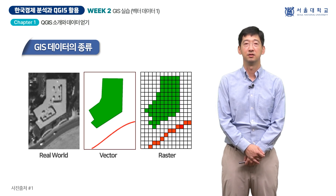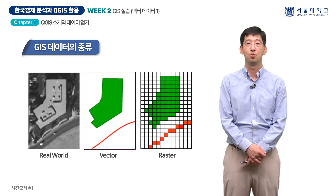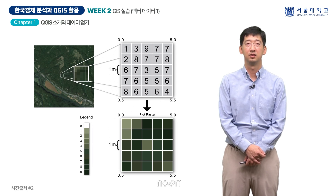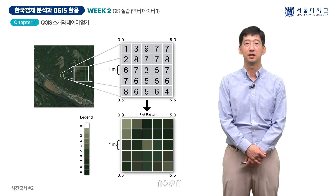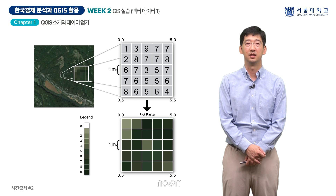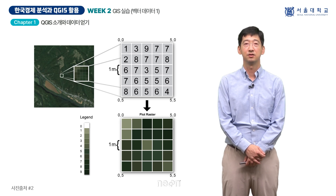벡터 데이터는 특히 정확한 위치, 경계선, 연결성 등이 중요한 공간 분석에 주로 사용됩니다. 한편, 라스터 데이터는 픽셀이라는 정사각형 그리드 단위로 공간을 표현합니다. 각 픽셀에는 특정한 수치값이 저장되어 있으며 이는 보통 공간에 대한 특정 측정값을 나타냅니다. 대표적인 라스터 데이터 형식에는 TIFF가 있습니다.